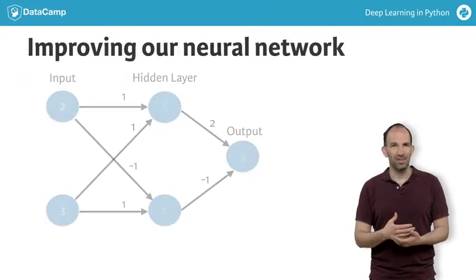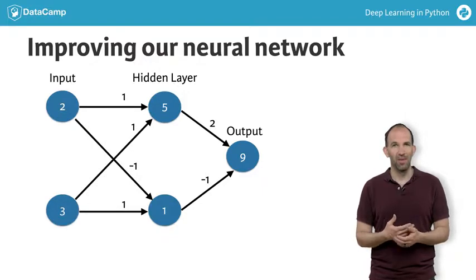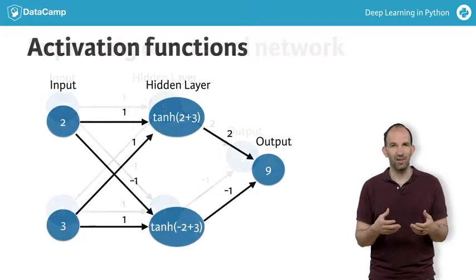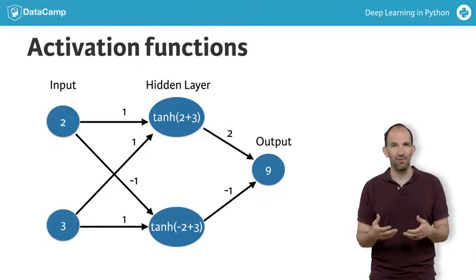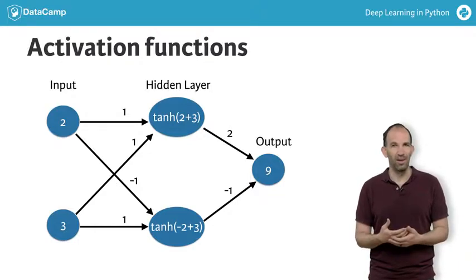Let's go back to the previous diagram. The top hidden node previously had a value of 5. For a long time, an S-shaped function called tanh was a popular activation function. If we use the tanh activation function, this node's value would be tanh of 5, which is very close to 1.